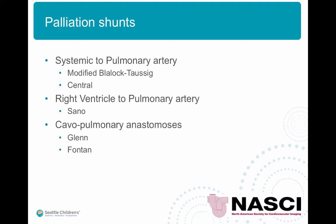The palliation shunts include systemic to pulmonary artery shunts such as the Blalock-Taussig shunt, the modified kind, and central shunts. The right ventricle to pulmonary artery shunts include the Sano shunt, and I'm also going to talk about the cavopulmonary anastomosis.